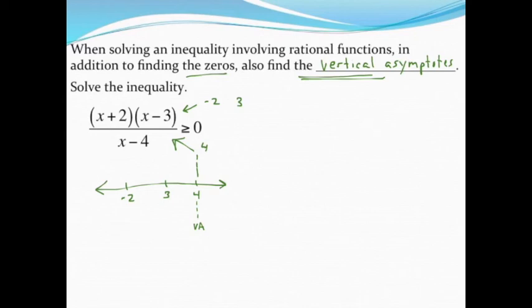Because remember, no matter what, your x value can never be equal to that vertical asymptote. So even if your inequality is leading you to believe that it's okay to be equal to zero, remember that plugging in four would never ever be okay. Because as soon as I make x four, I'd be dividing by zero and that can't happen.